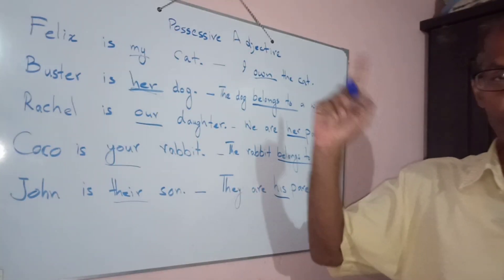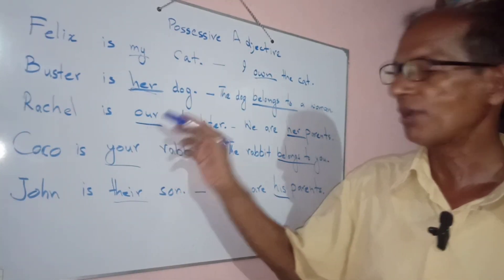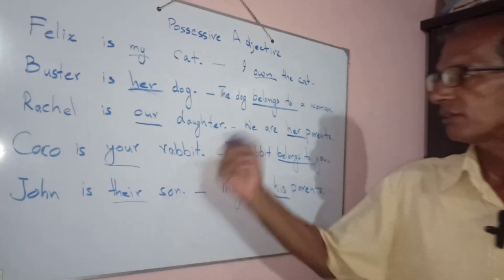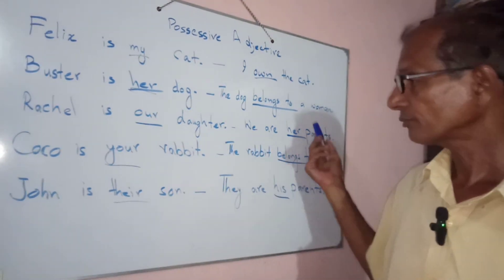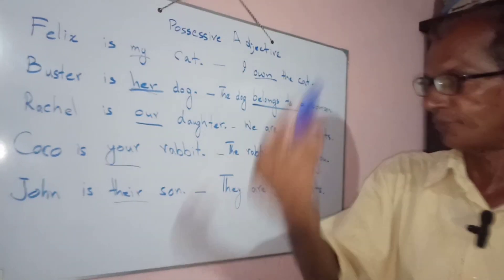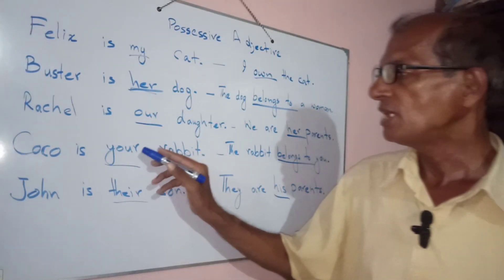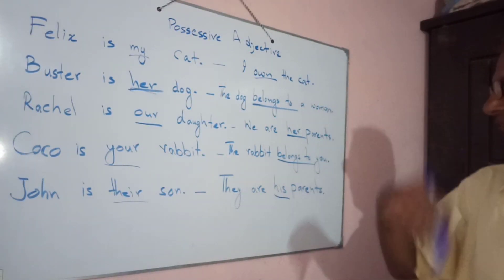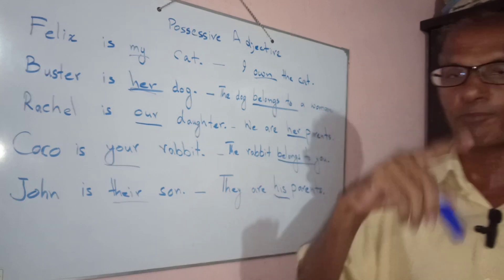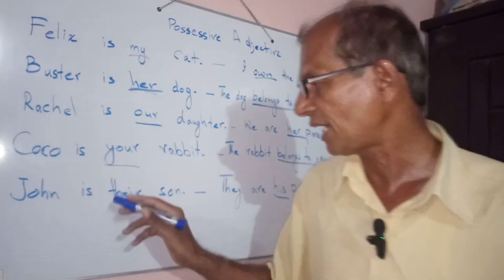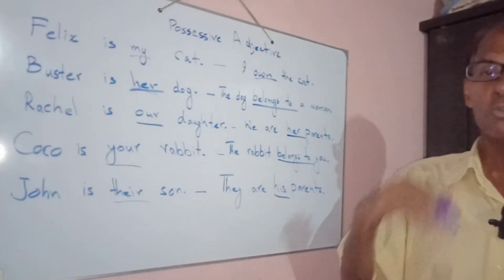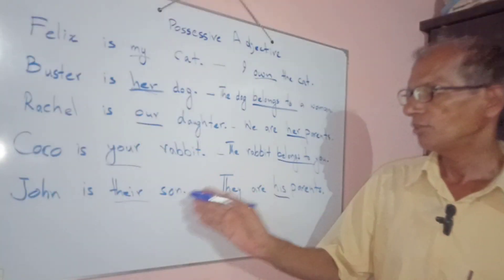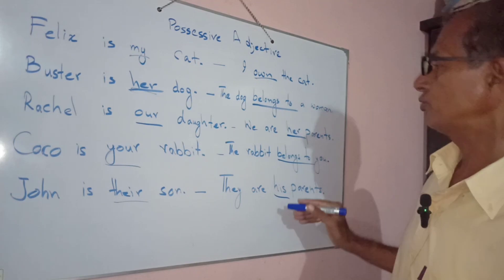Now look at the positions: 'my' — mera; 'her' — uska, for female; 'our' — hamara, for plural. 'Your' — tumhara, it can be singular and plural both. 'Their' — unka, and this is plural.